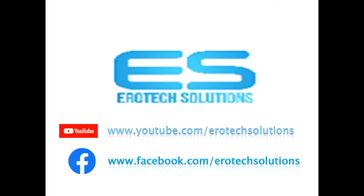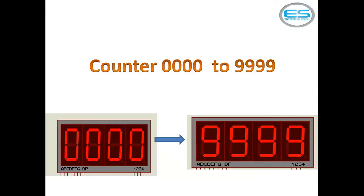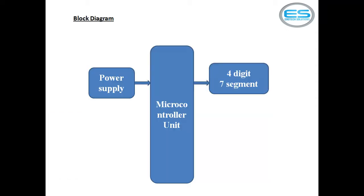Hi friends, let me show you an application which is a very simple counter program from 000 to 999. I'm Sheshanan from Aerotech Solutions. This is the application output — you can run a counter from zero zero zero, and it goes to the next: one, two, three, four, five — like this. This is a simple overview of this project.